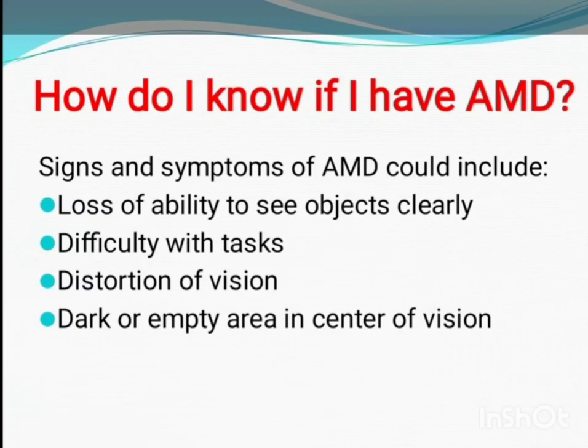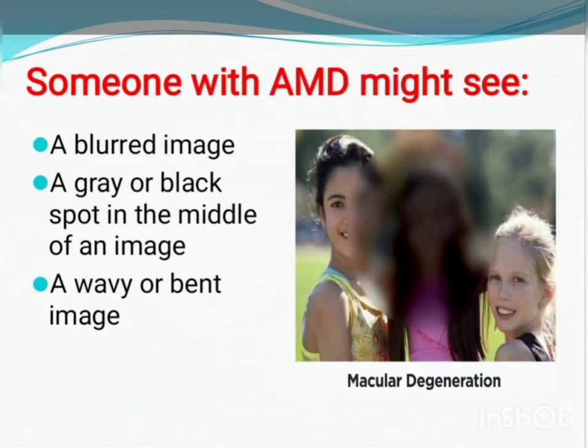Signs of AMD include losing the ability to see objects clearly, having difficulty with tasks that require detailed vision, noticing distorted vision where straight lines seem wavy or bent, and possibly seeing a dark or empty area in central vision. Someone with AMD might see a blurry, wavy, or bent image with a black dot at the center.